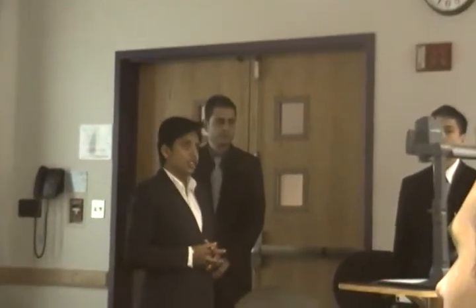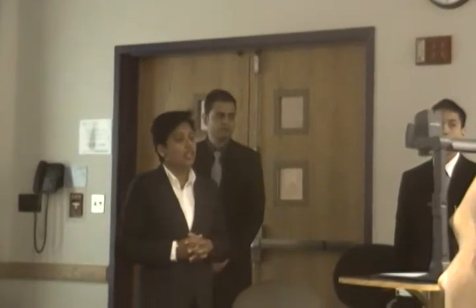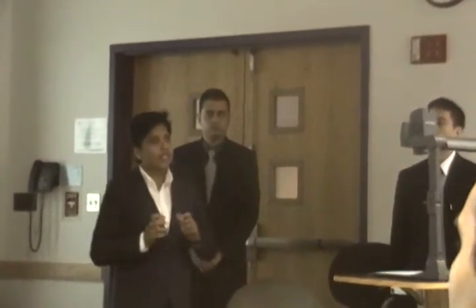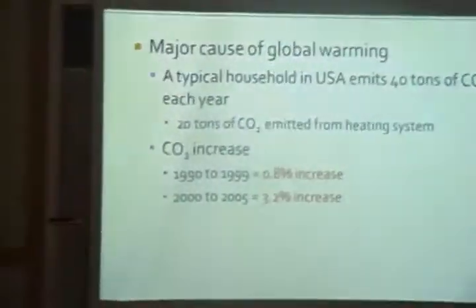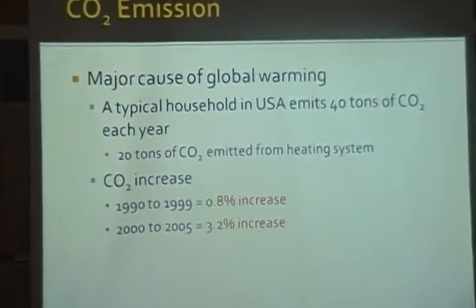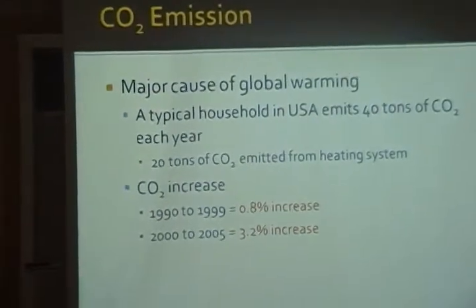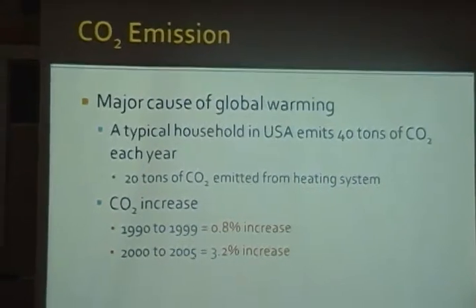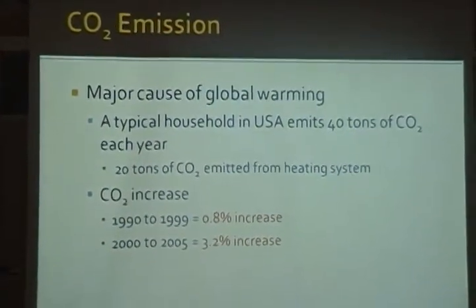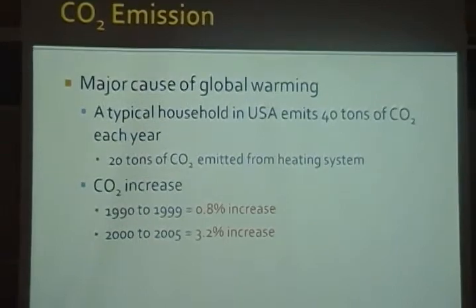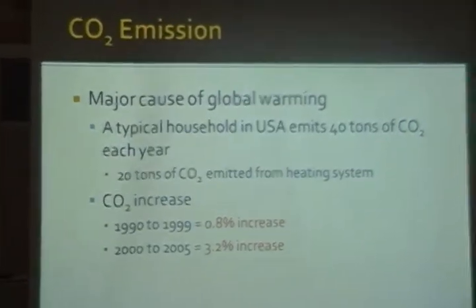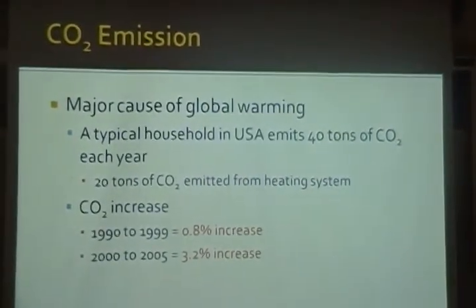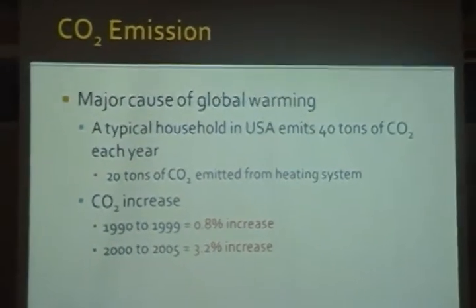Carbon dioxide emission is one of the major causes of global warming — it absorbs infrared radiation from the sun and traps heat in the earth's atmosphere. According to a study by the University of California, 40 tons of carbon dioxide is emitted each year from a typical household in the United States, and 20 of those tons come just from the heating system itself. According to the Energy Information Administration, from 2000 to 2005, emissions grew four times compared to the past 10 years.